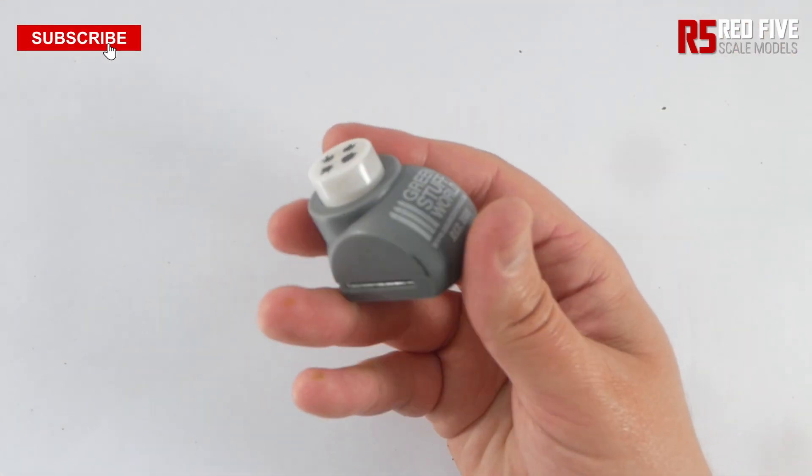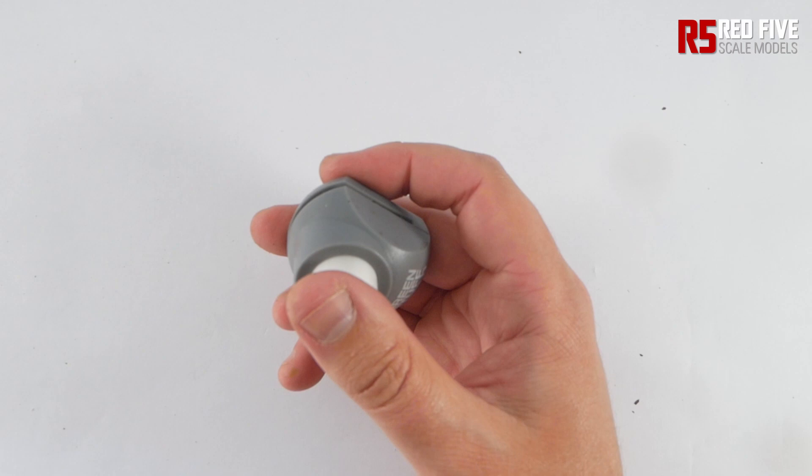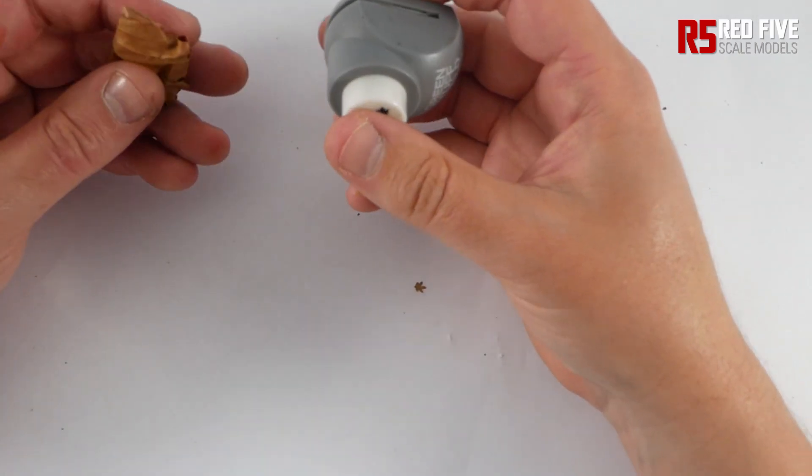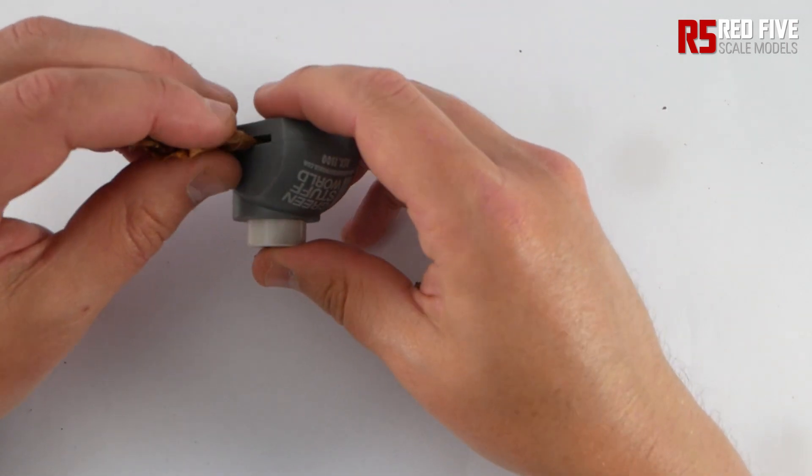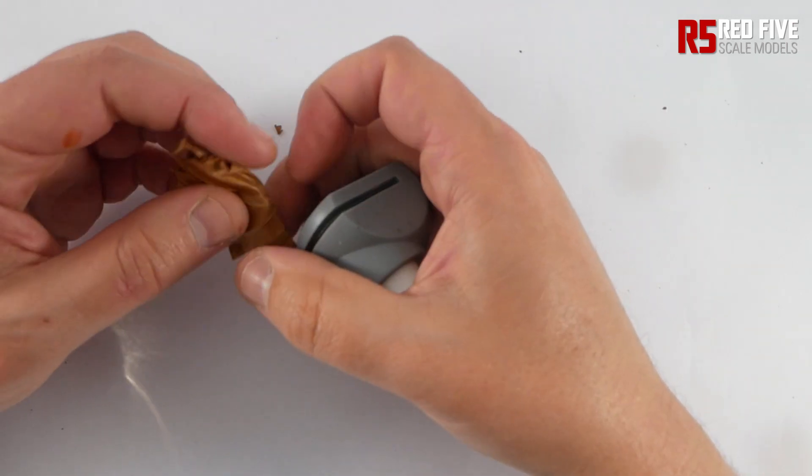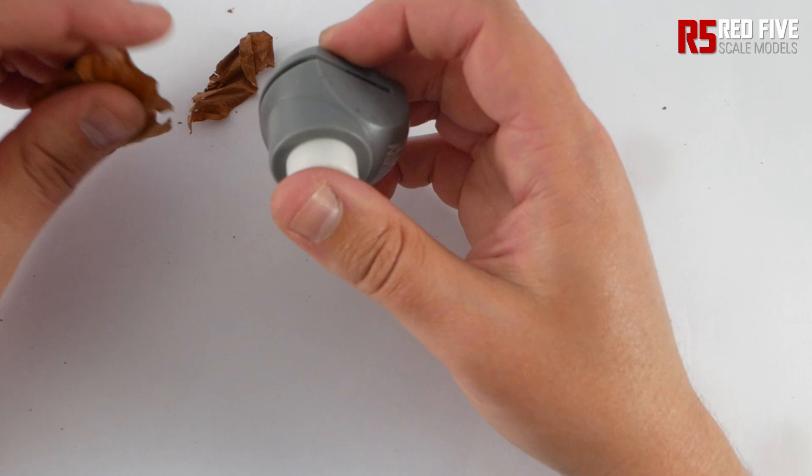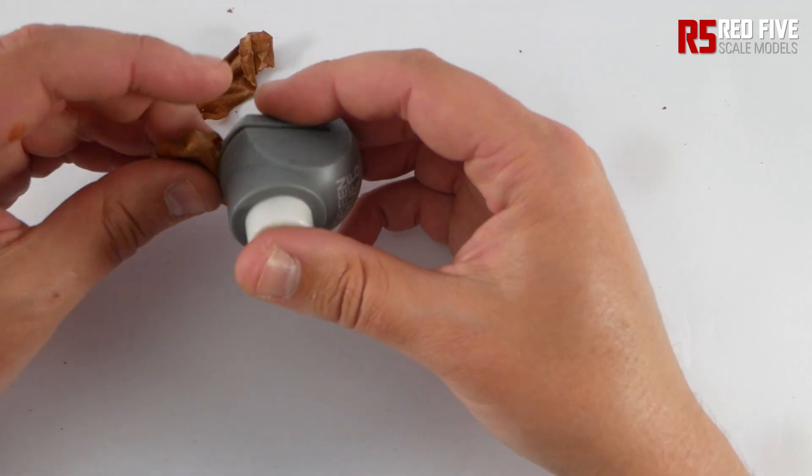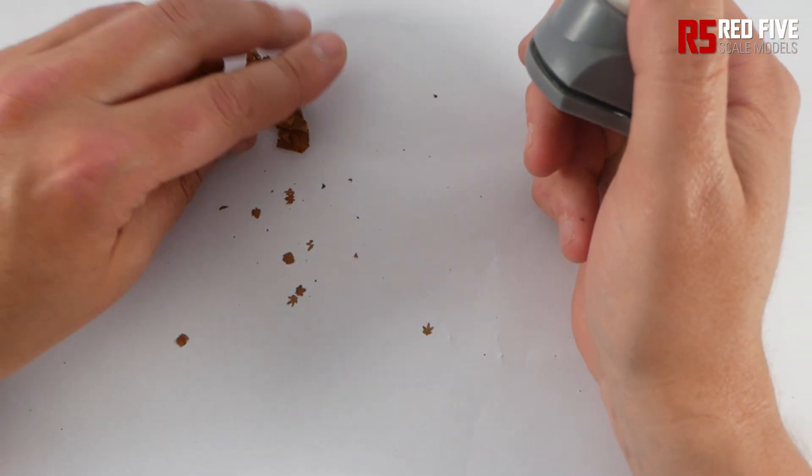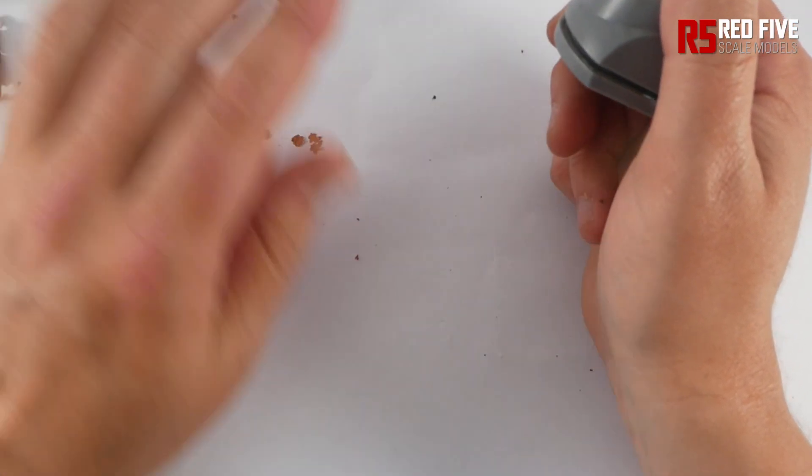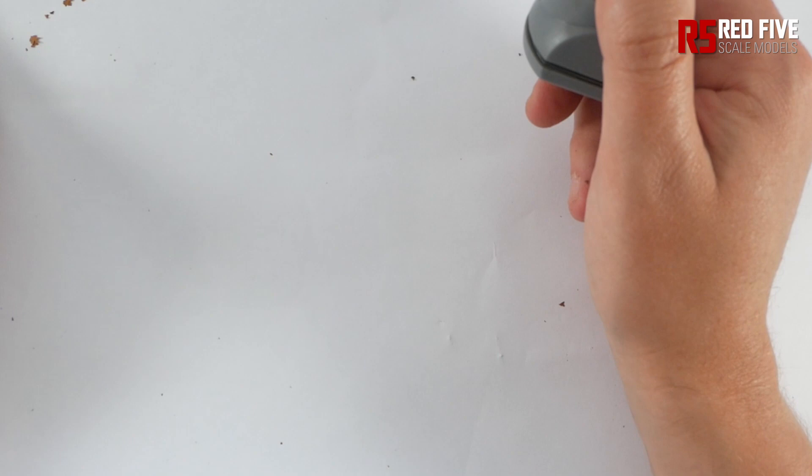But then, I invested in one of these from Green Stuff World, which is a leaf cutter. The issue you've got though, is A, they're particularly fragile, so they'll have a tendency to just crumble. And B, they all started off as green, and now they've all withered and died and gone brown.